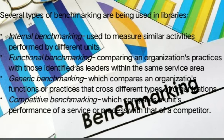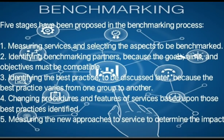Third, generic benchmarking, which compares an organization's functions or practices that cross different types of organizations. Lastly, competitive benchmarking, which encompasses units' performance of the service or process with that of a competitor. The five stages proposed in the benchmarking process are: measuring services and selecting the aspects to benchmark; identifying benchmarking partners; identifying the best practices to be discussed, noting that best practice varies from one group to another; changing procedures and features of services based upon those best practices identified; and lastly, measuring the new approaches to determine the impact.